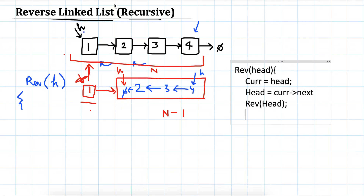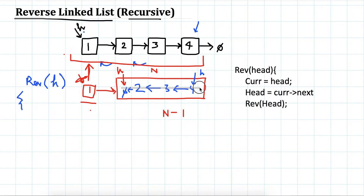After this step, we assume that if this function works correctly, the remaining n minus 1 nodes will be in this state: 4 will be pointing to 3, 3 will be pointing to 2, 2 will be pointing to null, and head will be updated to point to node 4. So once we have this part reversed, we need to handle the current node.